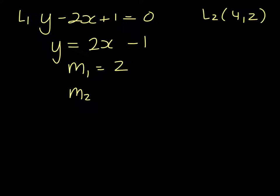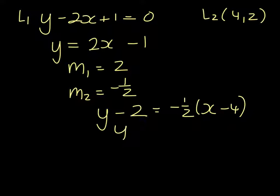which means the gradient of L2 is minus 1 half. We're going to use the formula y minus y1 and it goes 3, 4, 2, equals M upon x minus x1, which gives us that y minus 2 equals minus 1 half x plus 2, y equals minus 1 half x plus 4.